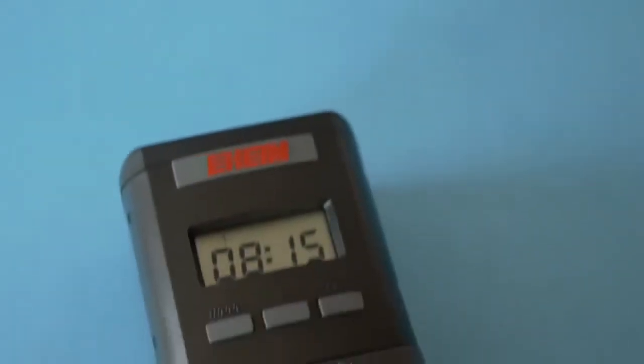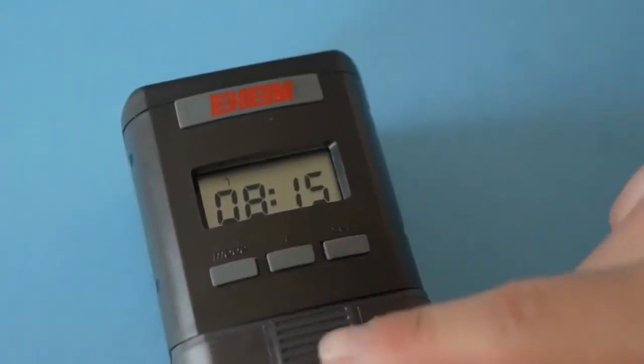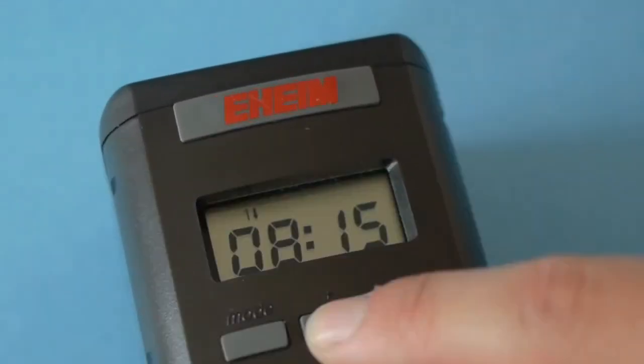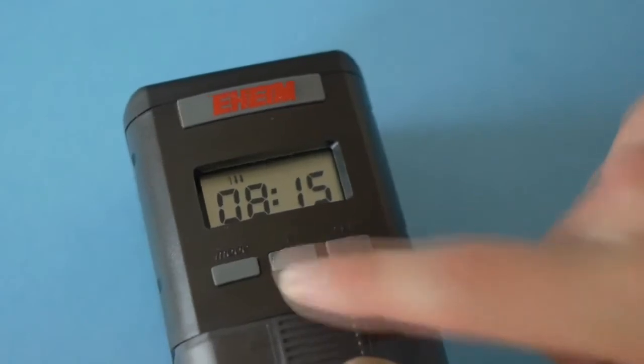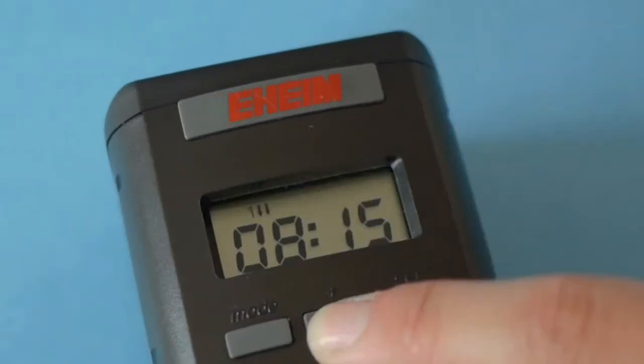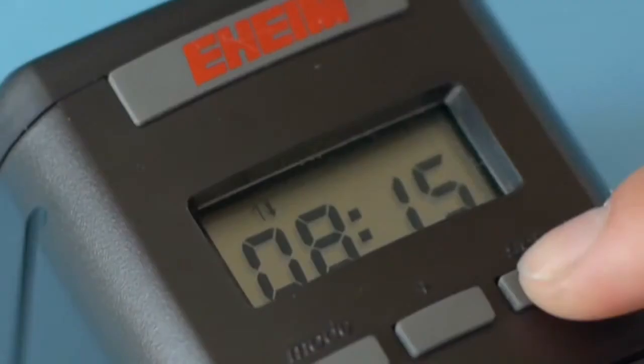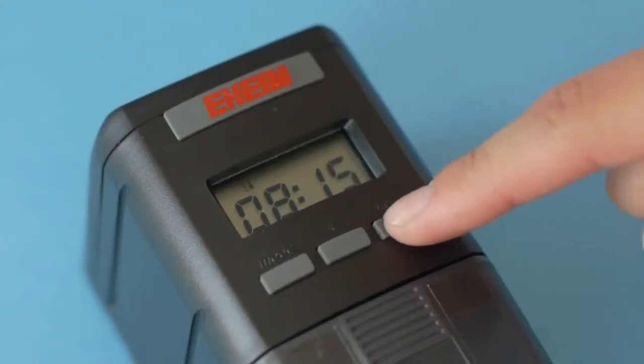But wait, do not press set yet. We still need to program the number of rotations. Press mode. The number one in the top will be blinking. Press plus once to have the unit dispense food once. Press plus again to have the unit dispense food twice, which will be one minute after the initial feeding. In order for the unit to dispense food, an arrow beside the one has to be there. If there's no arrow, there is no food. Press set to save these settings.